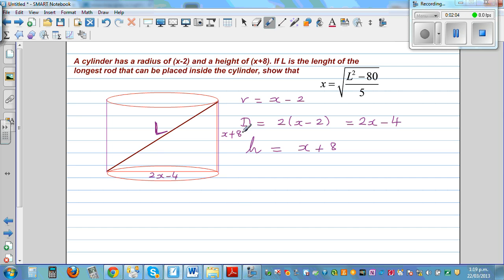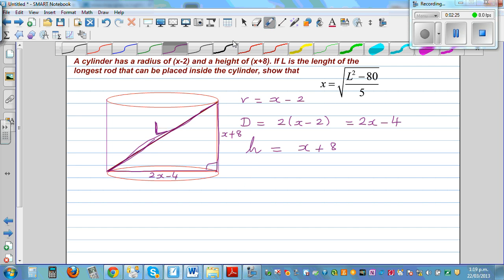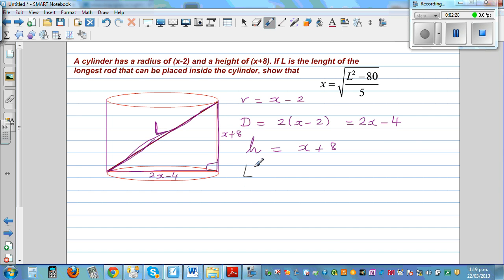So which theorem can you use here? If you look at this triangle, there is a well-known theorem that you have used right from year 10 or year 9. Well, this is Pythagoras theorem. Okay, so using Pythagoras theorem, I can say L squared, the hypotenuse squared, is equal to the square of the smaller sides. So 2x minus 4 the whole squared, plus x plus 8 the whole squared.